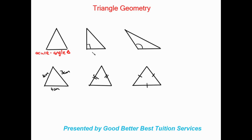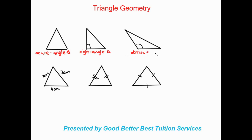In the next triangle we have a right angle, so this is, as we know, a right angle triangle. Moving on, we can see another triangle which has an obtuse angle, and we'd call this an obtuse angle triangle.